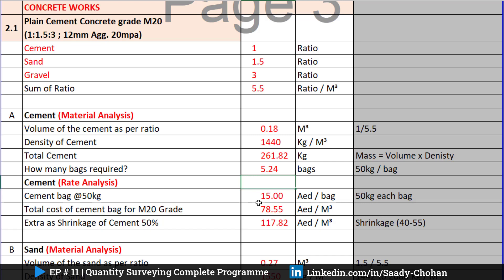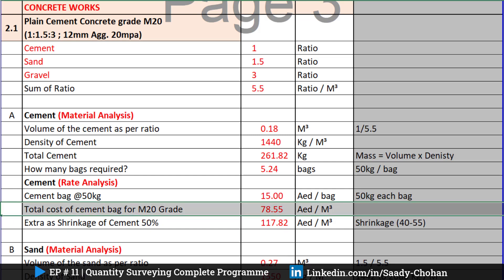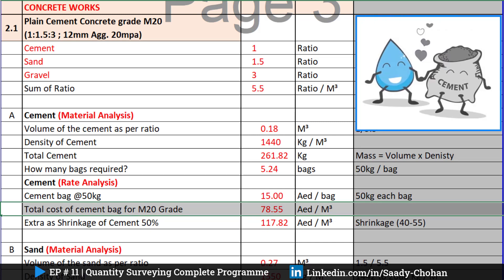We need 5.4 bags of cement. We need to know the rate per bag. According to your region and country, check the rate. I've mentioned here 15 AED per bag, so I simply multiply the total bags by the cost, and the total cost of cement is 78.55 AED. But that's not the only cost — what about shrinkage?